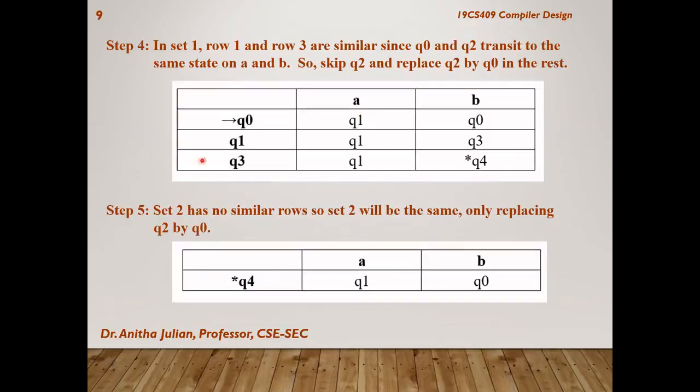Next, we have to find out similar rows and as you had noticed clearly, row 1 and row 3 were similar since Q0 was transiting to Q2 over the symbol A and B. So, we are removing Q2. We are skipping Q2 and wherever Q2 comes, we are replacing it with Q0. In both the tables, Q2 is no longer required. So, we are removing Q2 and replacing it with Q0.